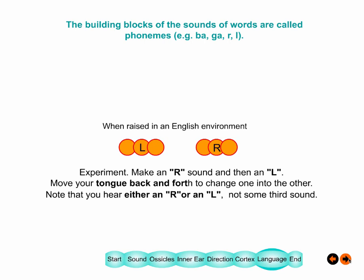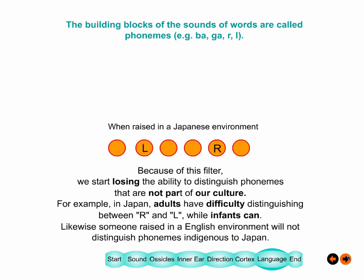When raised in an English environment, we develop a filter for L and R as distinct phonemes — just moving your tongue back and forth produces one or the other, with nothing perceived in between. If you're raised in a Japanese environment, where R and L are not distinct, both sounds are grouped into the same phoneme and you can't hear the difference between them.